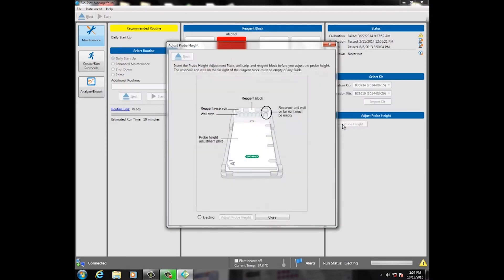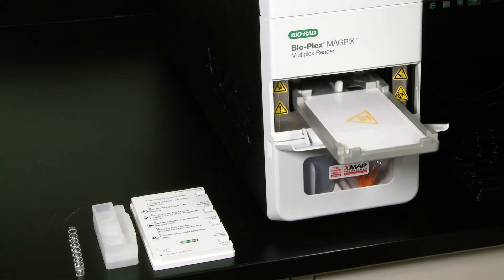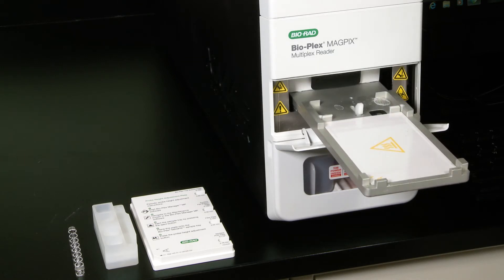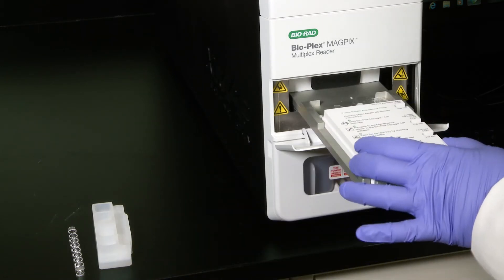Once the sample tray has ejected, place the probe height adjustment plate, reagent block, and strip tube as indicated.